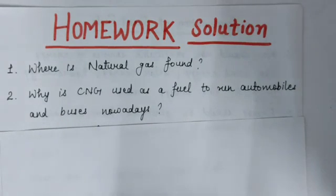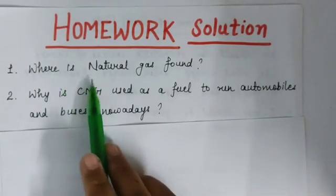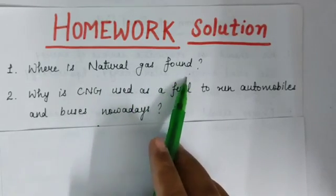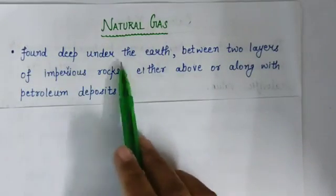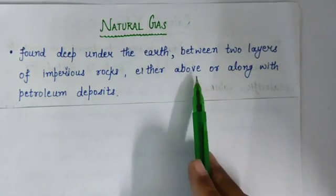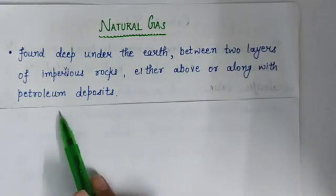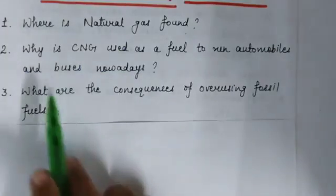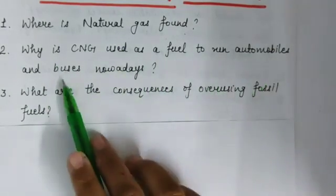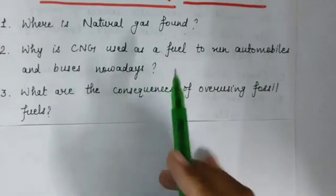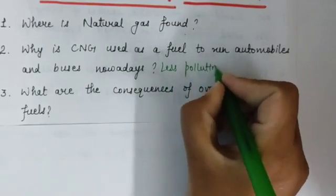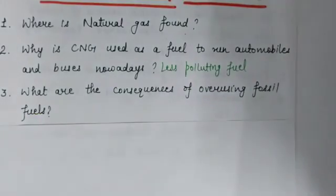Now we will discuss the homework solutions from the previous lecture. Question 1 was: where is natural gas found? Answer: it is found deep under the earth, between two layers of impervious rocks, either above or along with petroleum deposits. Question 2: why is CNG used as a fuel to run automobiles and buses nowadays? The reason is it is a less polluting, clean fuel.